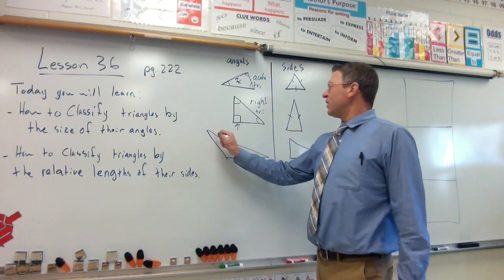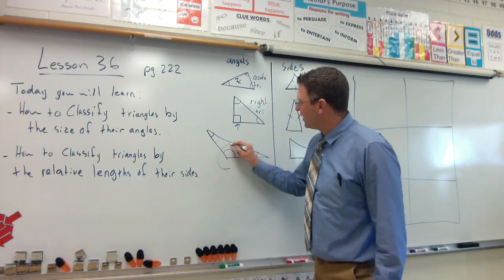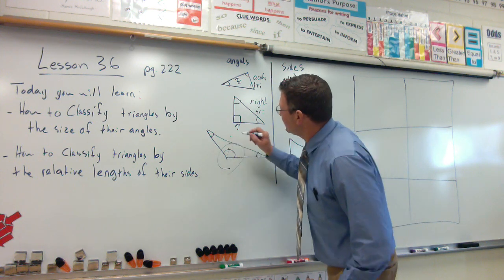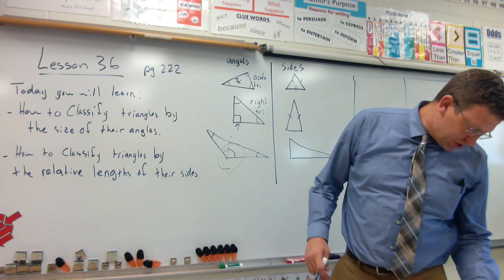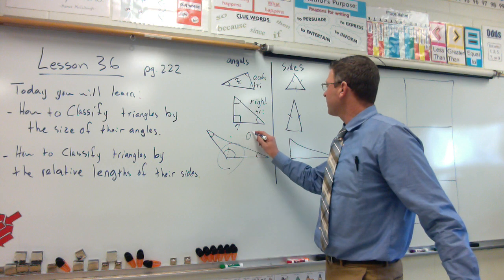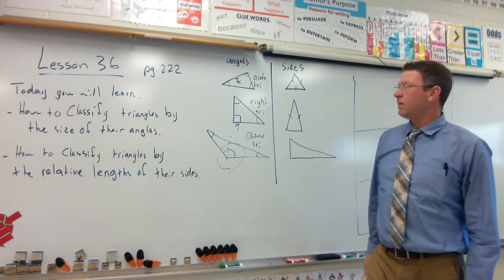So, okay, this one has an acute angle, an acute angle, and one obtuse. Look at how big it is. Here would be our 90 degrees. Notice it's bigger than 90 degrees. Therefore, it is an obtuse triangle. One big angle, obtuse.